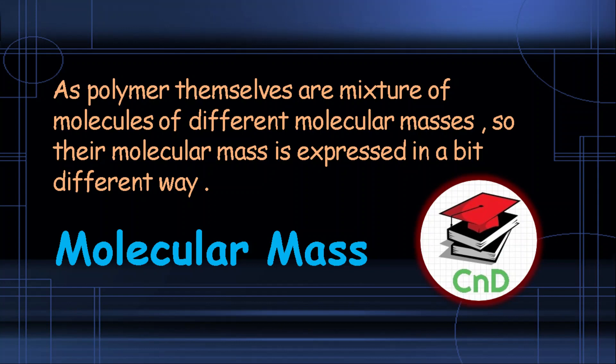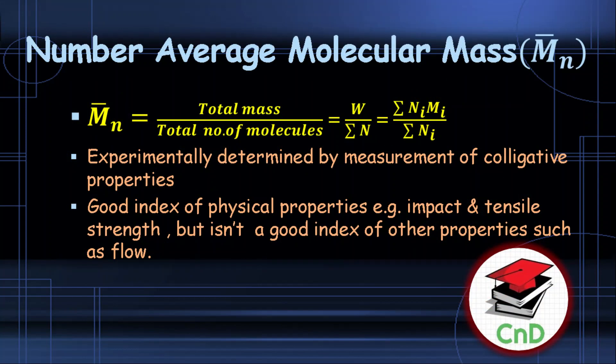How do we define the molecular mass of polymers, since polymers themselves are a mixture of molecules having different molecular masses? To address this, we define various formulas such as the number average molecular mass. For the number average molecular mass, we take the total mass divided by the total number of molecules — mathematically, the summation of n_i·m_i divided by the summation of n_i, where n_i is the number of molecules of a particular mass.